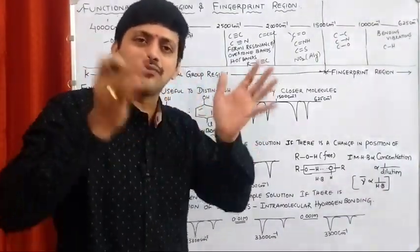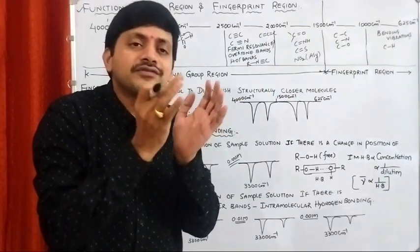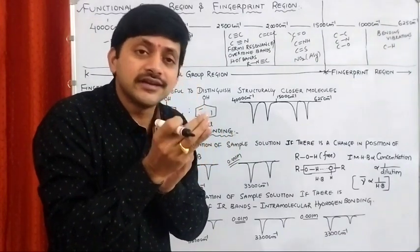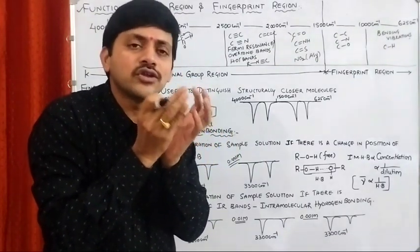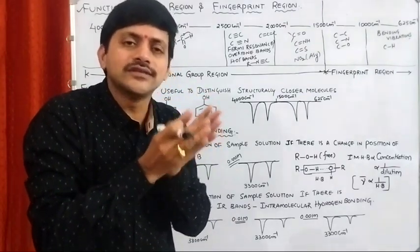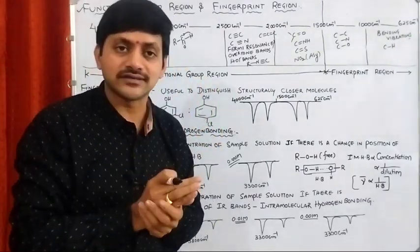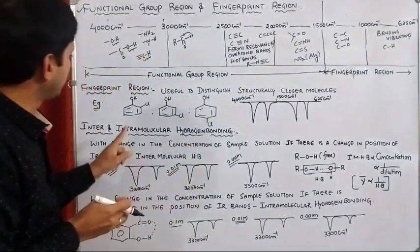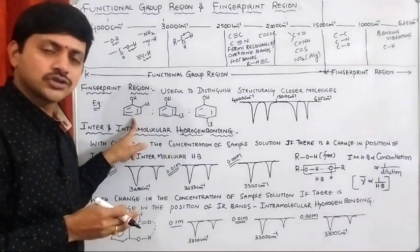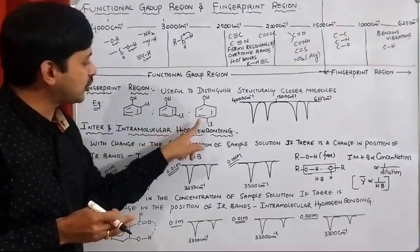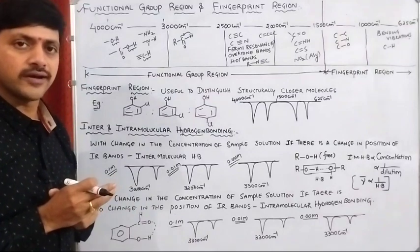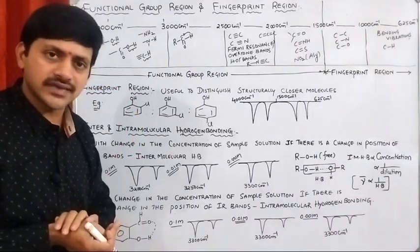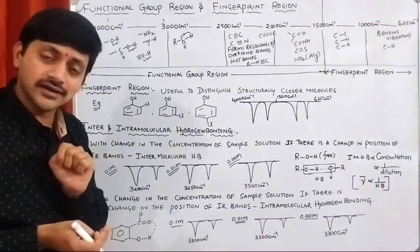In chemistry, we have different molecules where the molecular formula is the same but the structures are different — those are called structurally closely related molecules, or simply isomers. For example, orthochlorophenol, metachlorophenol, and parachlorophenol are three moieties. These three molecules have the same molecular formula but different structures.